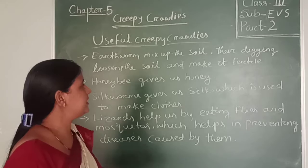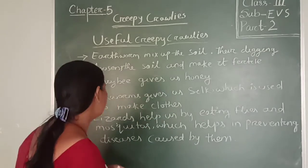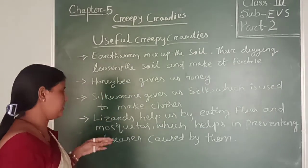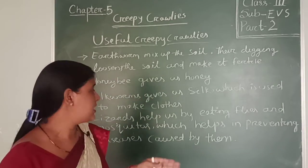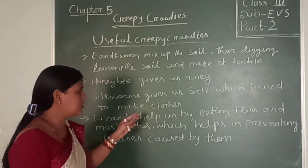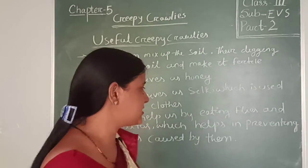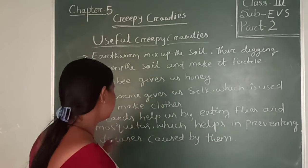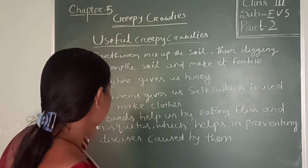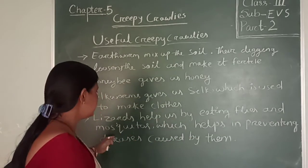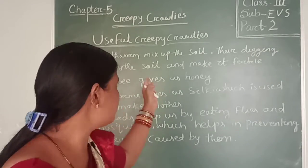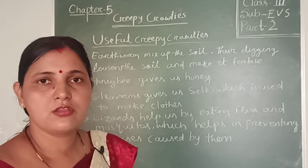The second one is honeybee — honeybee gives us honey. The third one is silkworm — silkworm gives us silk which is used to make clothes. The last one is lizard — lizards help us by eating flies and mosquitoes. We see in our house lizards always eat flies and mosquitoes or small insects, which helps in preventing diseases caused by them. In this way creepy crawlies are very useful for us.